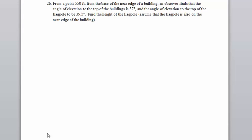From a point 550 feet from the base of the near edge of a building, the observer finds that the angle of elevation to the top is 37 degrees, and the angle of elevation to the top of a flagpole is 39.5 degrees.